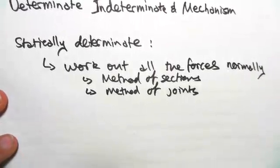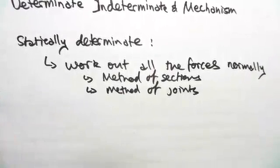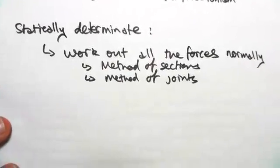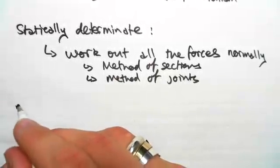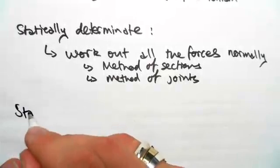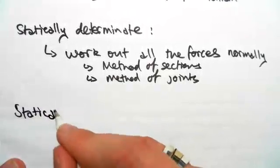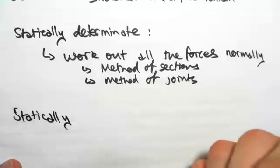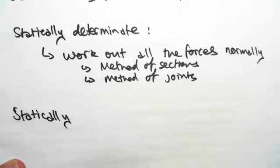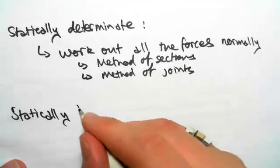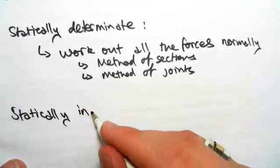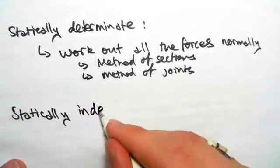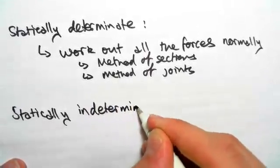Statically indeterminate means we can't actually do this. As you saw in the previous example, we had something that was statically indeterminate and we worked it out using a different method other than static ways.